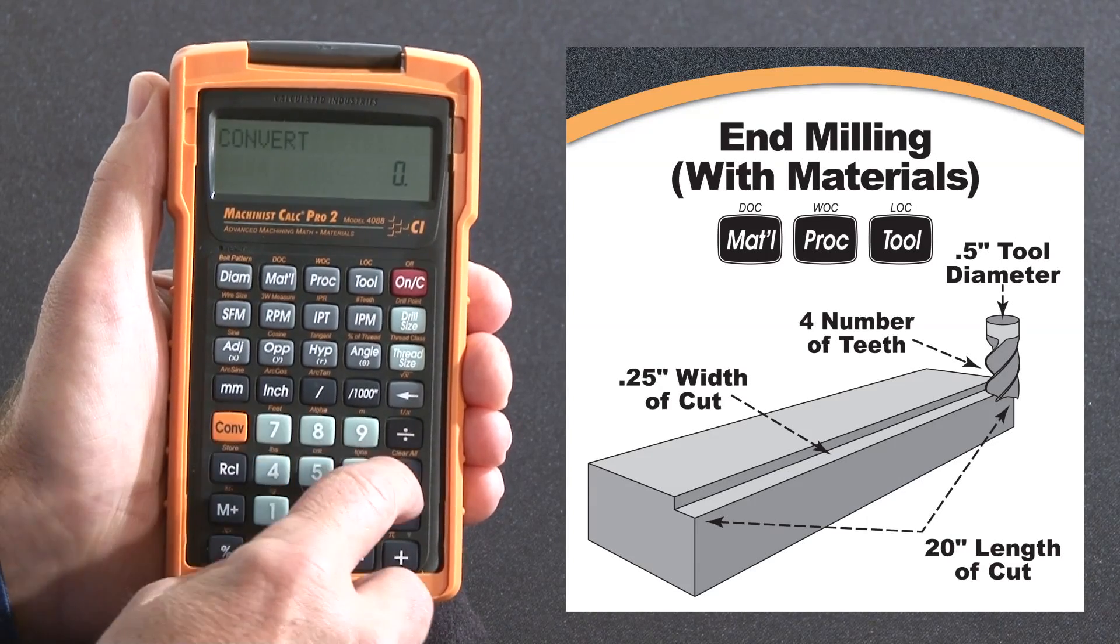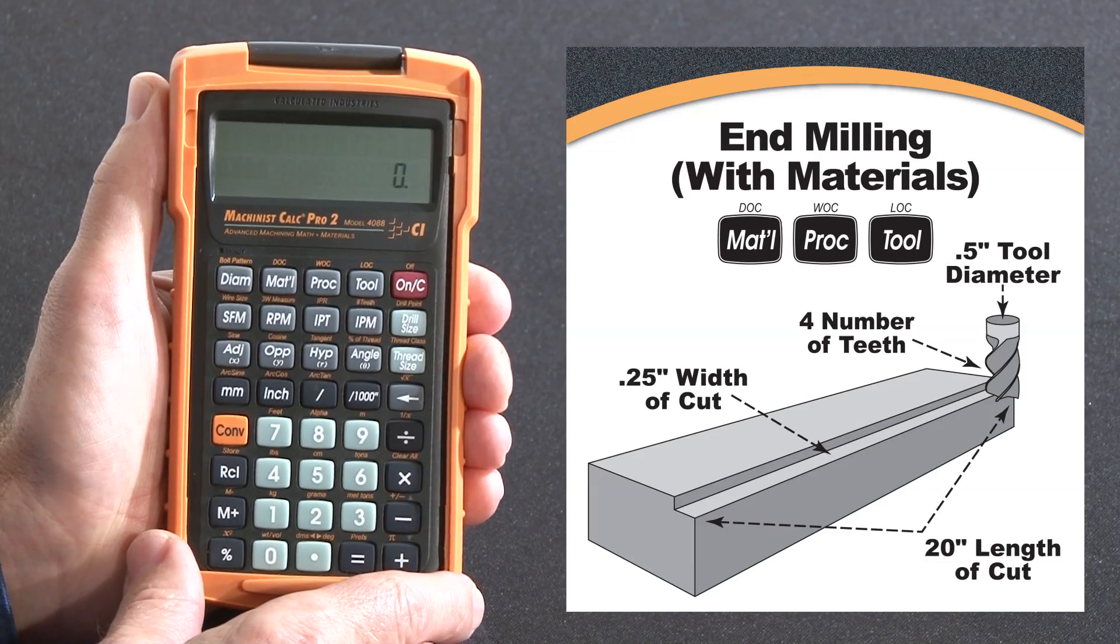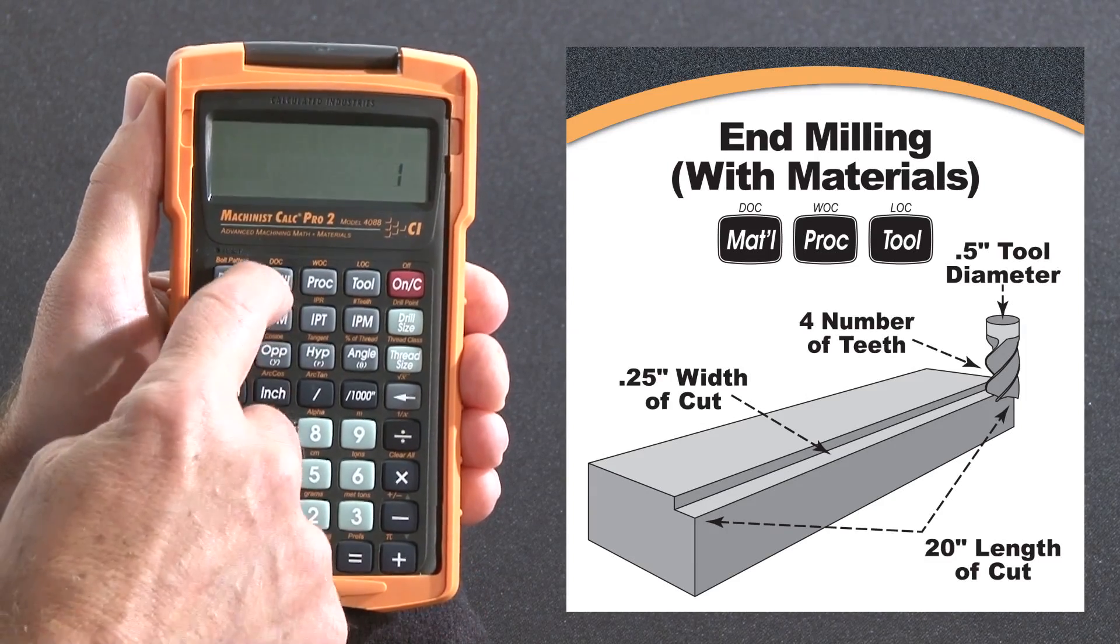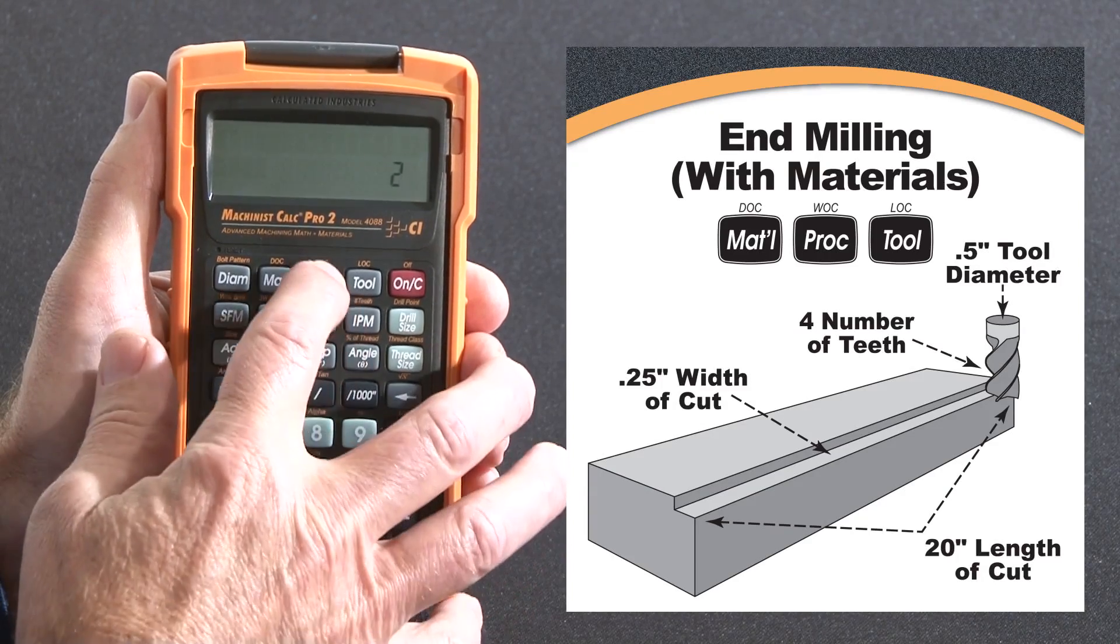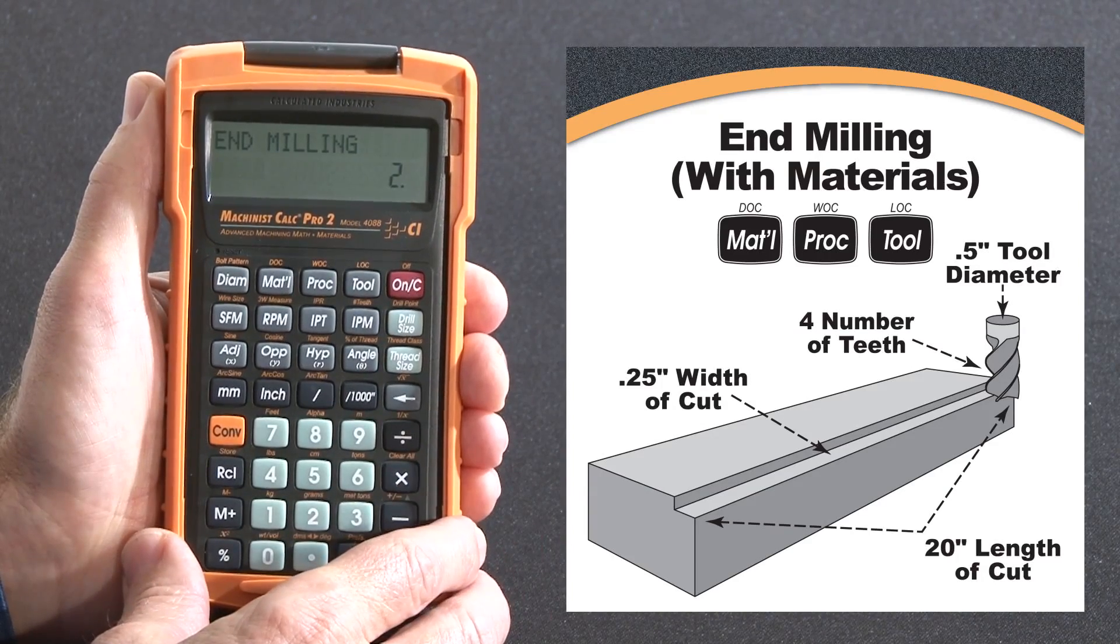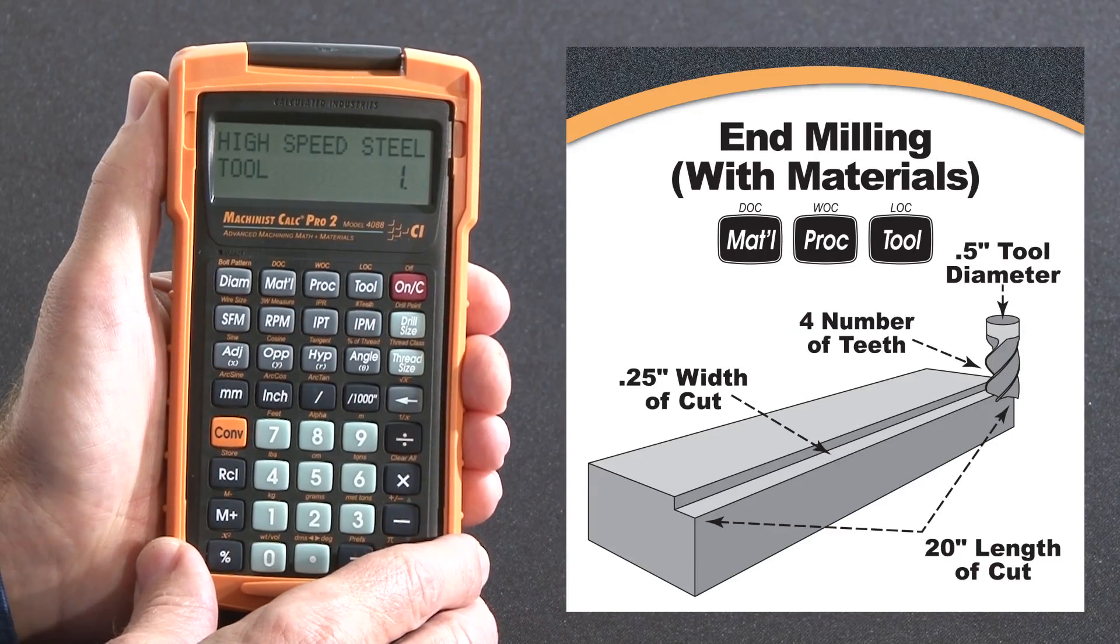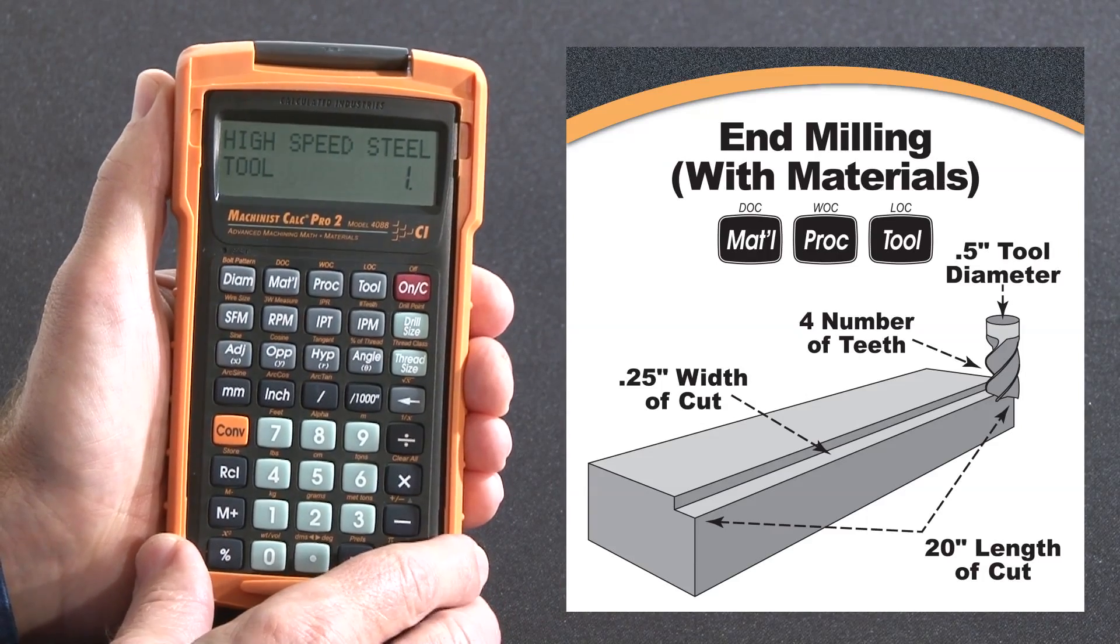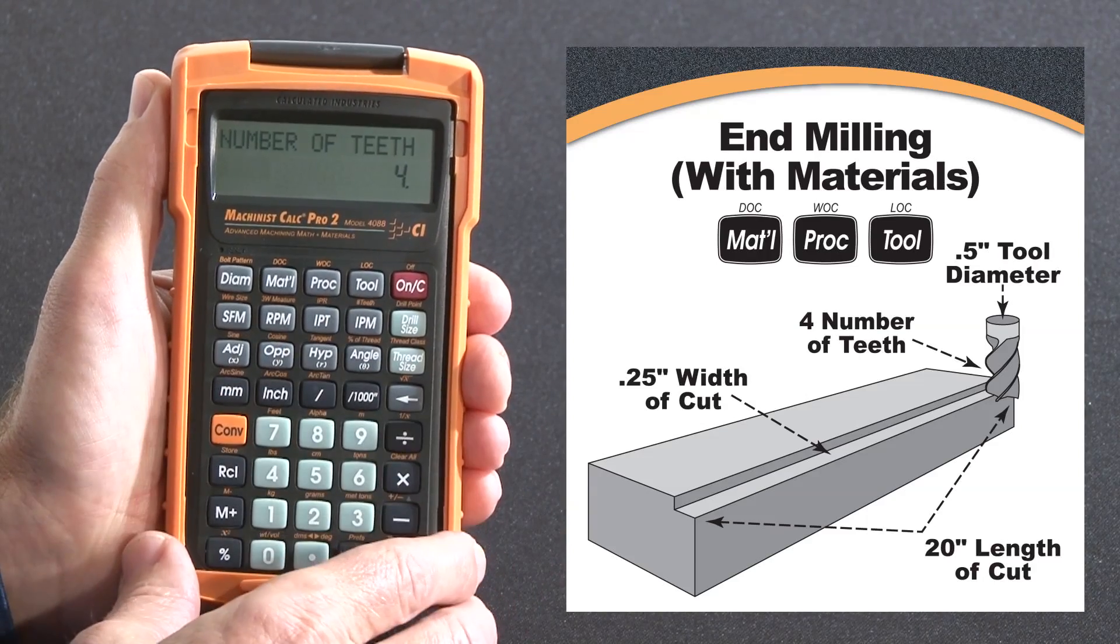I'll start off by hitting convert times to clear everything out for a good starting point. Now the material I want to use is number one, the 1020 low carbon steel, the process is number two, end milling, and the tool type is the high speed steel tool. There's four teeth on this tool, so I'm going to hit four, convert, number of teeth is up there.